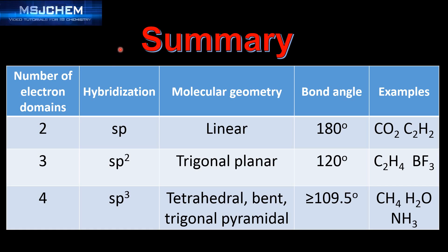Finally, we look at the relationship between the number of electron domains, the type of hybridization, the molecular geometry, and the bond angle. Atoms with two electron domains feature SP hybridization, have a linear molecular geometry, and a bond angle of 180 degrees — examples are carbon dioxide and ethyne. Atoms with three electron domains feature SP2 hybridization, have a trigonal planar shape, a bond angle of 120 degrees, with examples including C2H4 ethene and BF3 boron trifluoride.